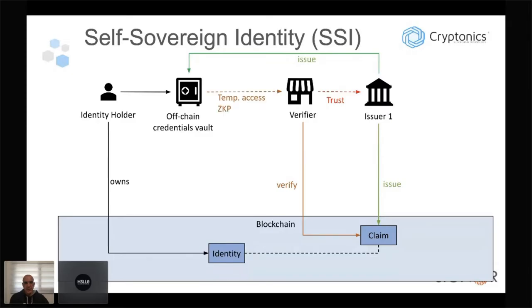A credential claim can be an on-chain claim on the blockchain or it can be in an off-chain credentials vault — it can be issued either on-chain or off-chain. For data privacy, off-chain is preferable, but there are things we might want to issue directly on the blockchain. A verifier can verify any claim over an on-chain identity openly, get temporary access to the off-chain credentials vault, or receive a zero-knowledge proof or additional signature directly from the identity holder.